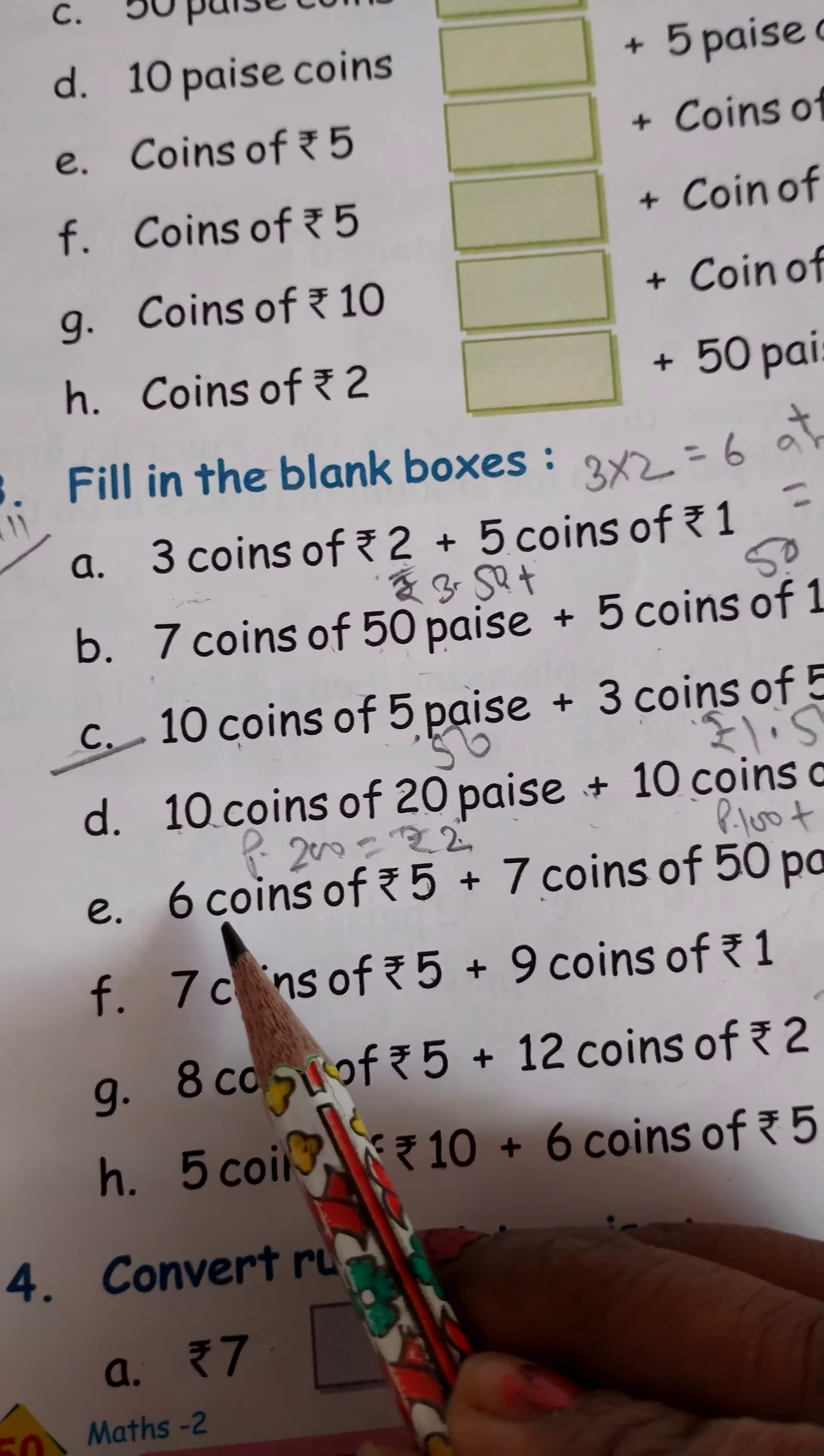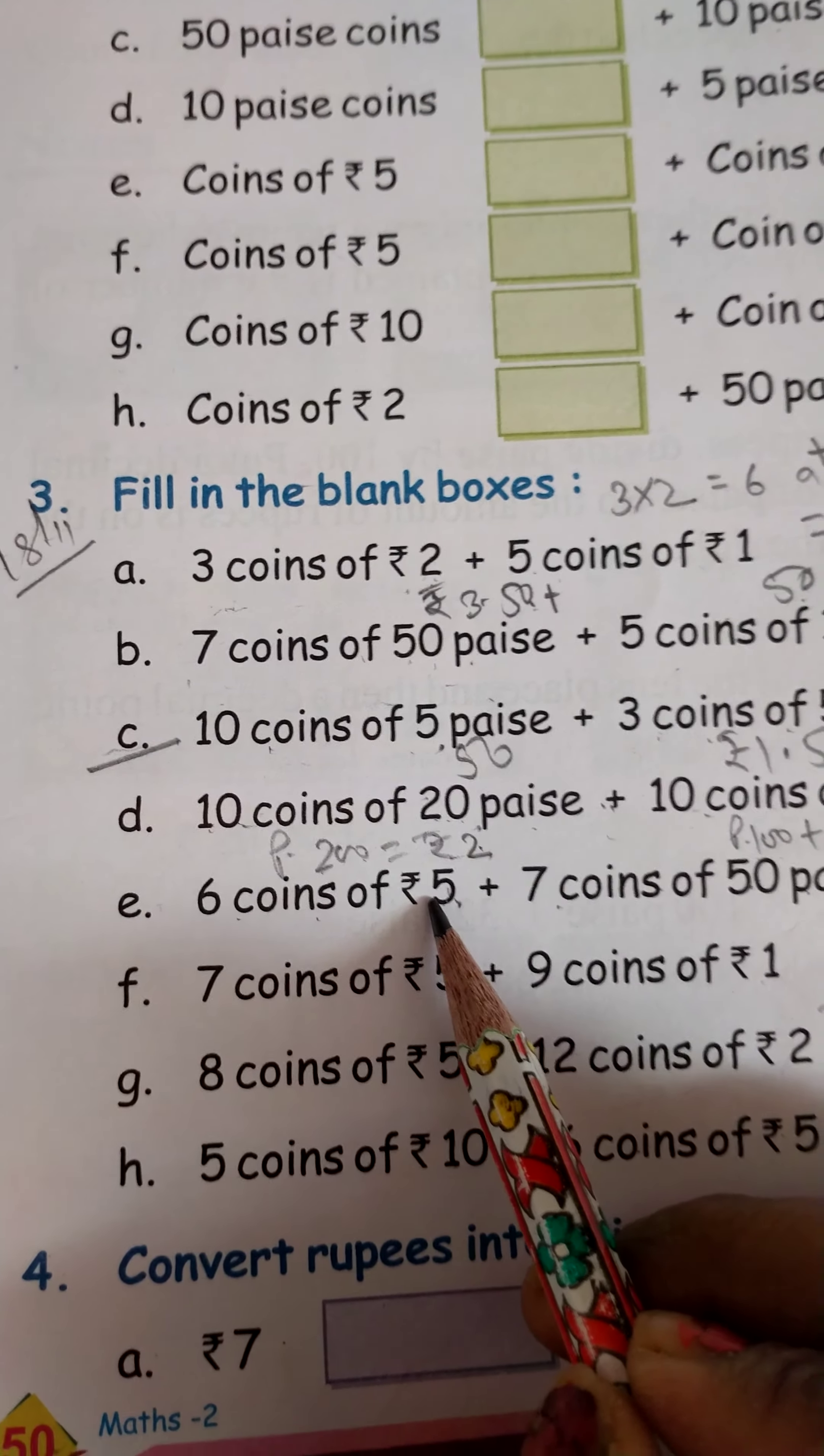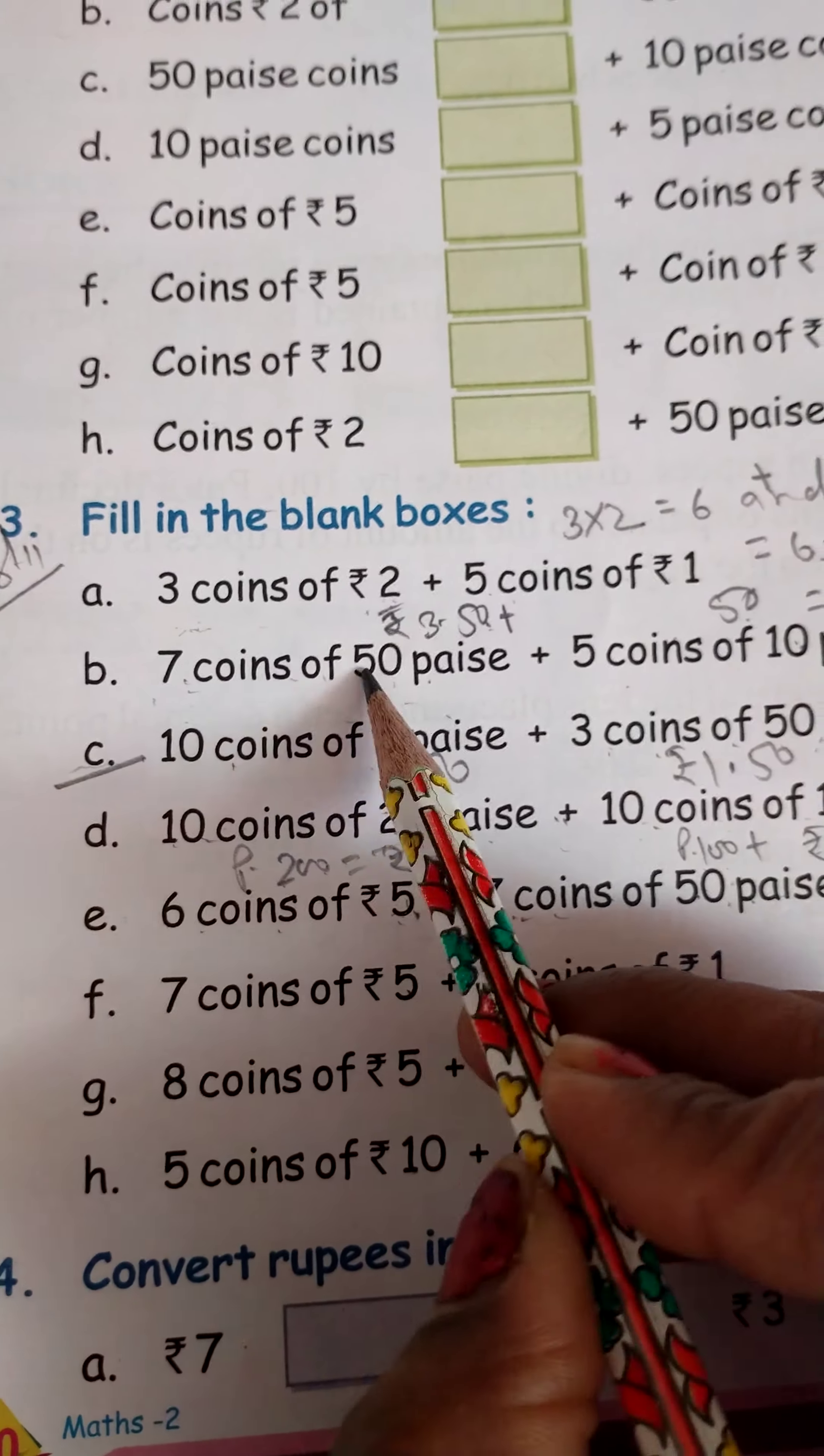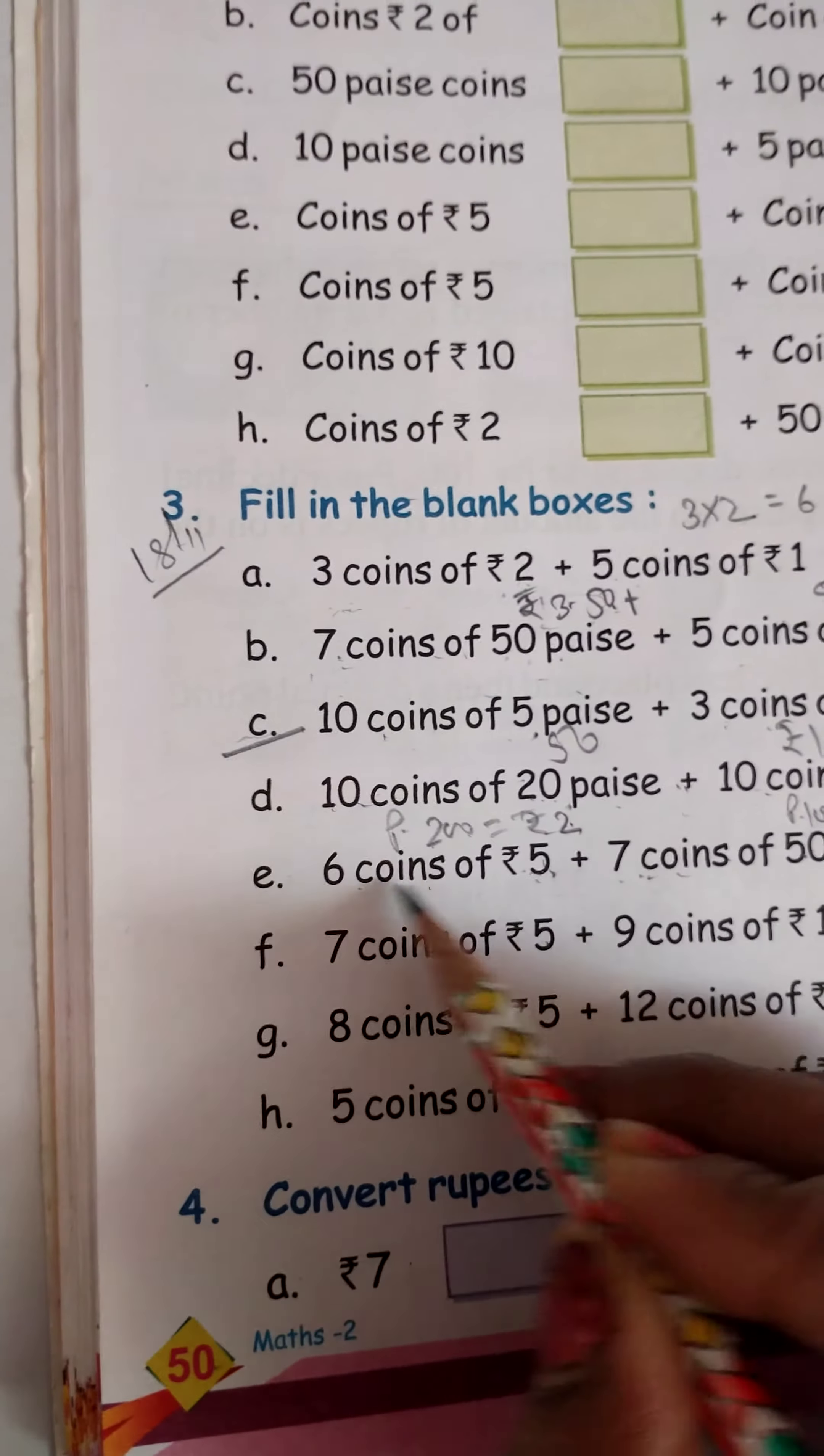Question number E: 6 coins of rupees 5, which is 6 coins of 5 rupees, and plus 7 coins of 50 paise, which is 7 coins of 50 paise. As I told you earlier, 7 coins of 50 paise is how much? Rupees 3, 50 paise. And this is 30.